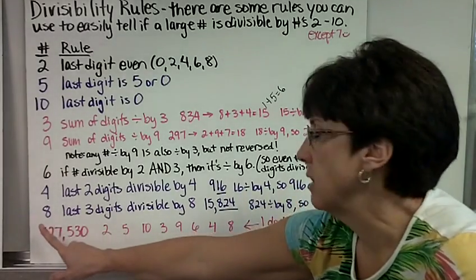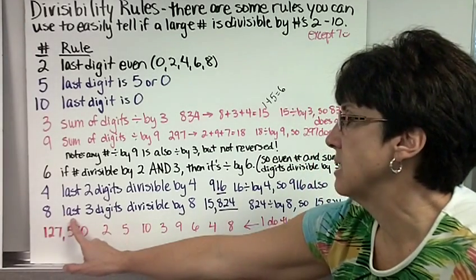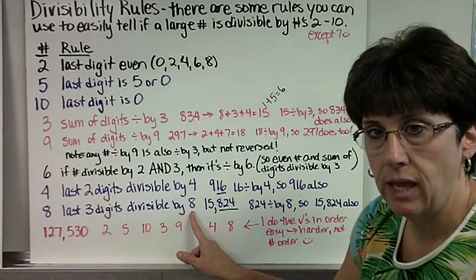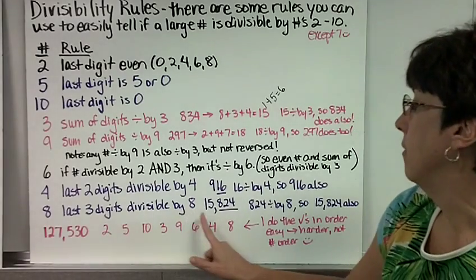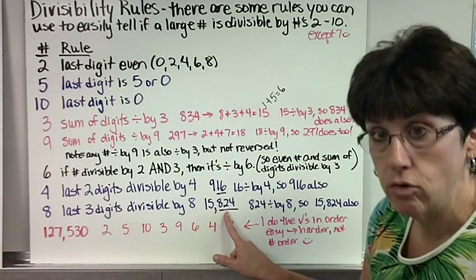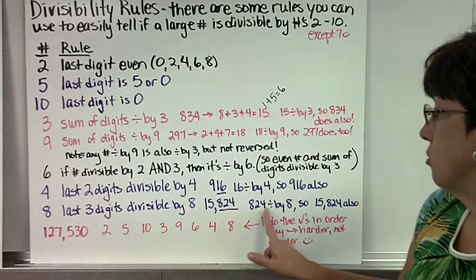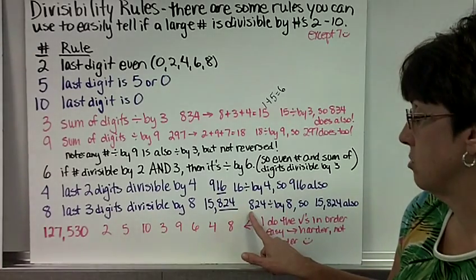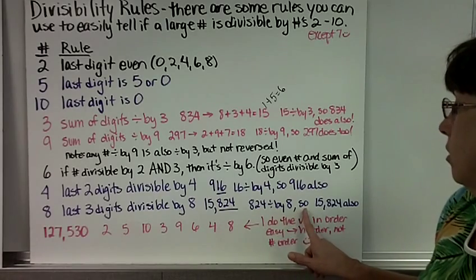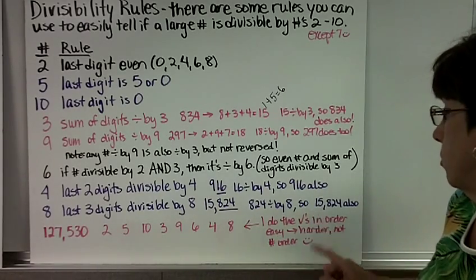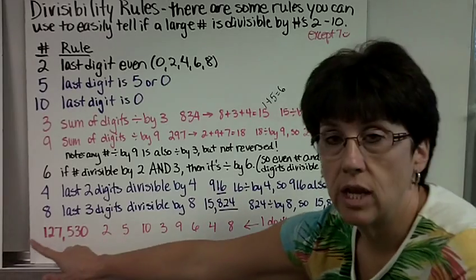This is the most annoying one, I think. 8. Because it's the last 3 digits, or the last 3 digits divisible by 8. Sometimes you have to actually do some work. So if I have the number 15,824, I look at 824. 824 is divisible by 8, 103 times, right? Because it goes into 800 and it goes into 24. So 15,824 is also divisible by 8.